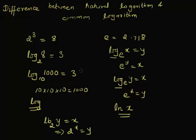There is a minute difference between the natural logarithm and the common logarithm. Common logarithm is to the base 10 and the natural logarithm is to the base E, which is an irrational number with an approximated value of 2.718.